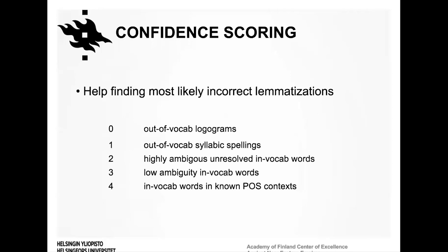To ease manual verification, we assign each lemma a confidence score based on the post-processing steps. This scoring allows editors to focus first on the most unlikely correct lemmatizations, maximizing the effectiveness of manual editing. In practice, we first generate a list of lemmas with low confidence scores, sort them by frequency, fix them manually, and push corrections back to the master glossary for retraining the model — improving the lemmatization cycle one text at a time.